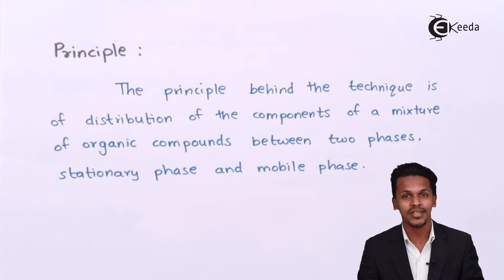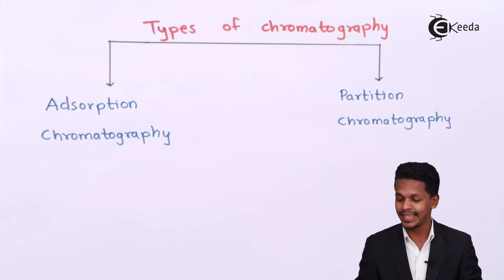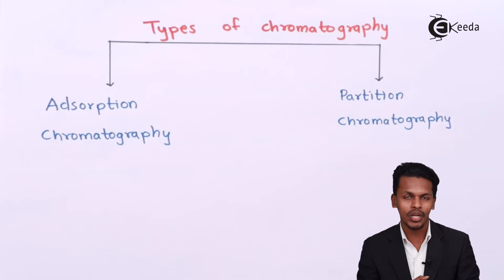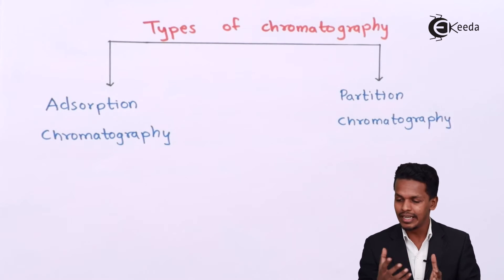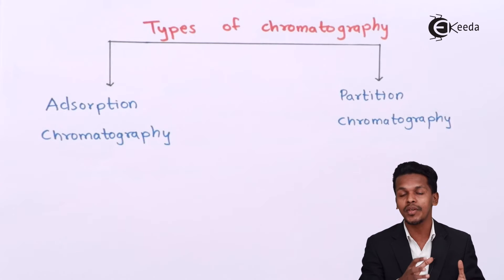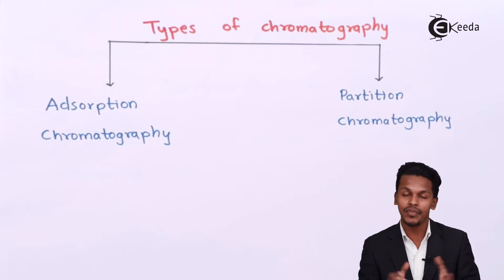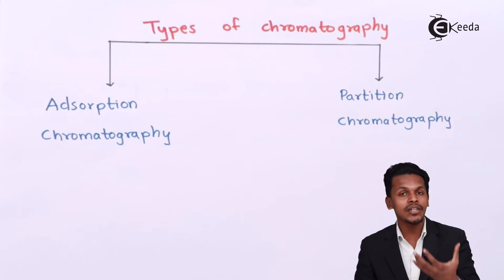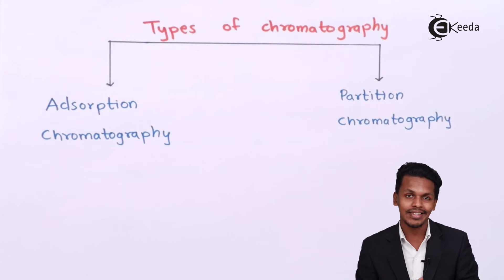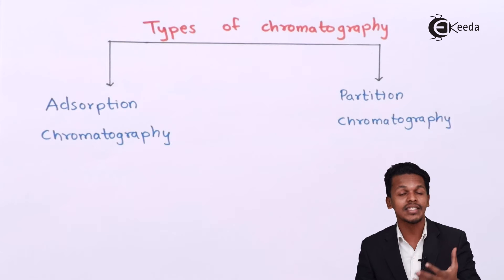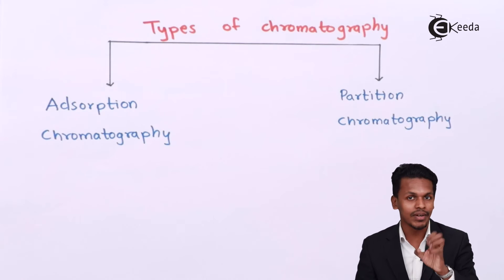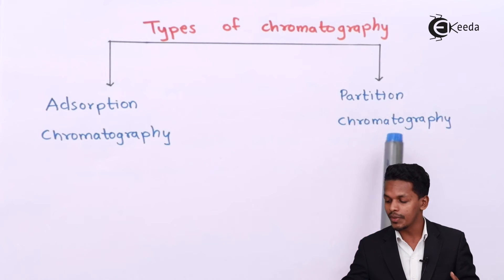The main types of chromatography are adsorption chromatography and partition chromatography. The principle behind adsorption chromatography is differential adsorption — the mixture is separated based on the tendency of each compound to attach to the adsorbent. The rate of separation depends on the organic compound and its degree of adsorption onto the adsorbent.